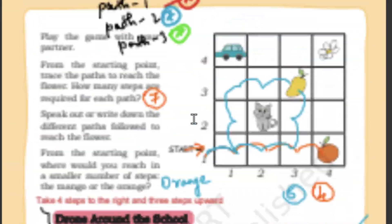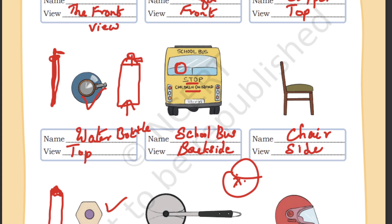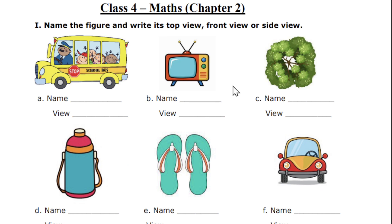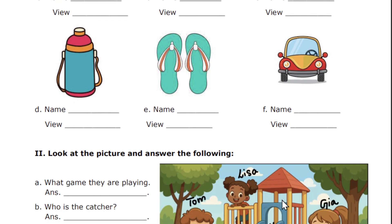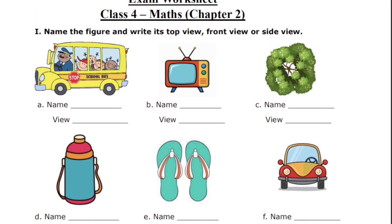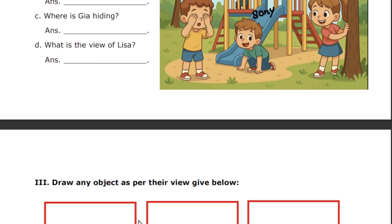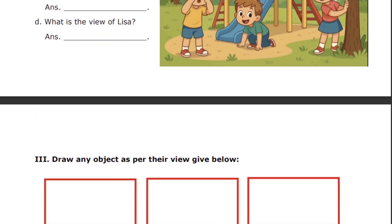In the question paper it will be in black and white, but I've made it colorful so you enjoy answering. If you have a color printer you can print it in color. If you're using your mobile phone, just write the answers — for example, write '1A: name, view' — one by one, and send it to me. If you have a printer, print it out, write the answers directly, take a picture, and send it to the same email.